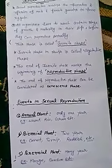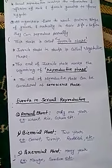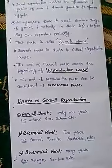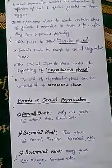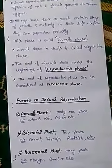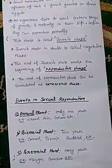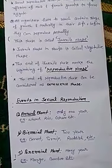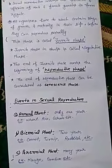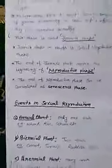So there are three phases. First is juvenile phase — it is the phase of growth. Second is reproductive phase — the end of juvenile phase leads to reproductive phase. And the end of reproductive phase is called senescence phase.